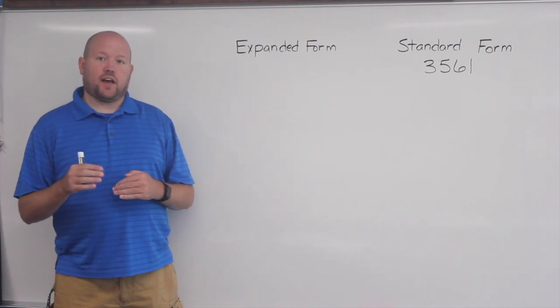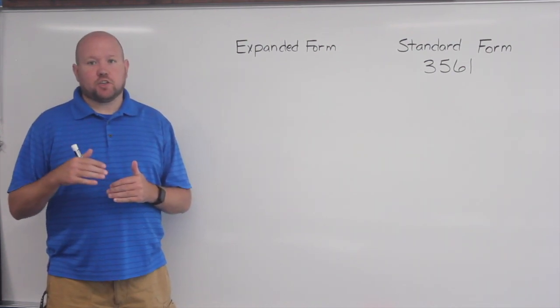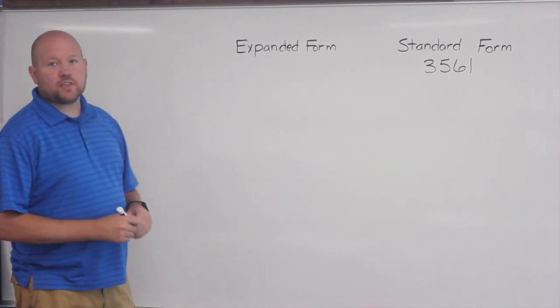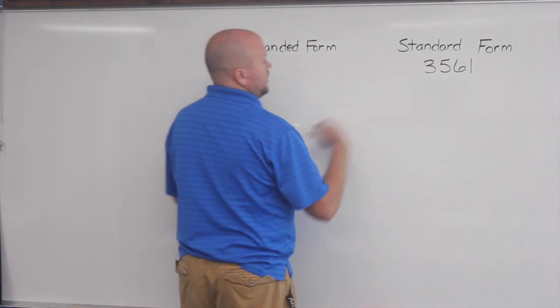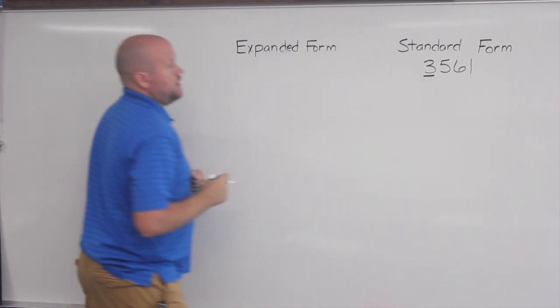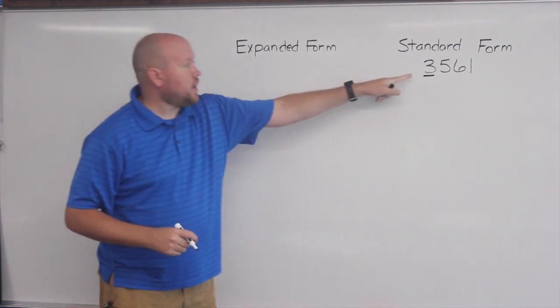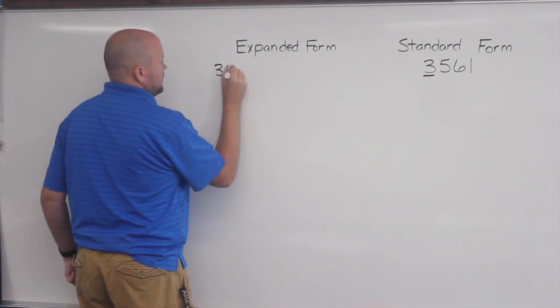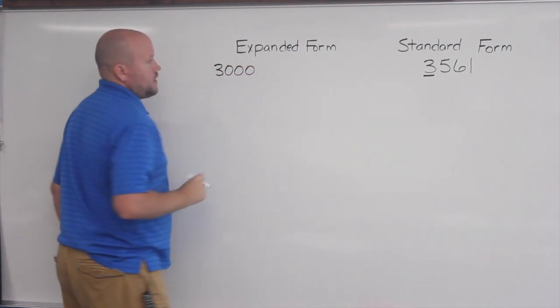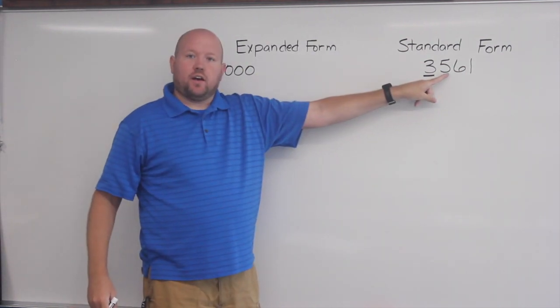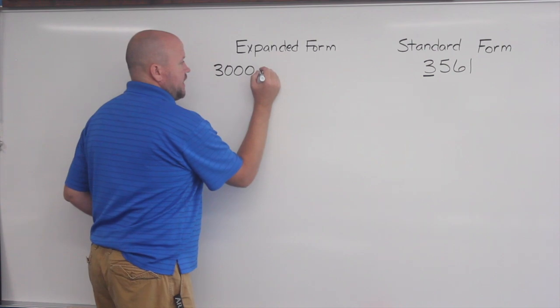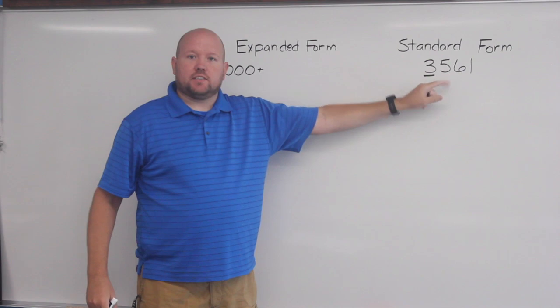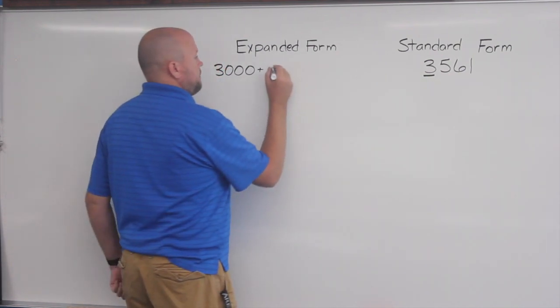So here we need to reemphasize making sure that students understand the value of each digit. To write this in expanded form, first I want to take this 3 and rewrite that by its value. Remember that the 3 was in the thousands place, so the value of that 3 is 3,000. Now I want to move to the value of the 5 digit. I'm going to put a little plus sign here. The value of the 5 digit is in the hundreds place, so its value is 500.